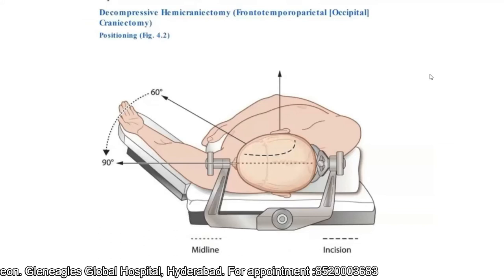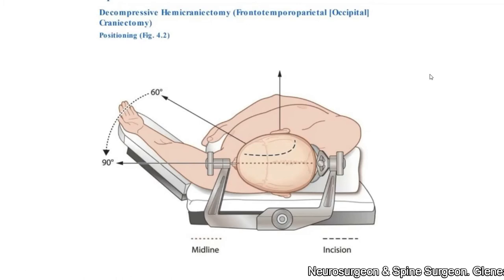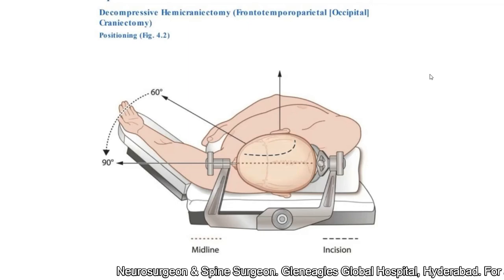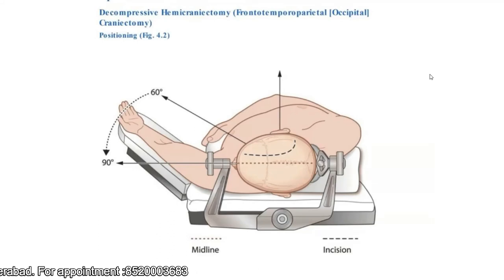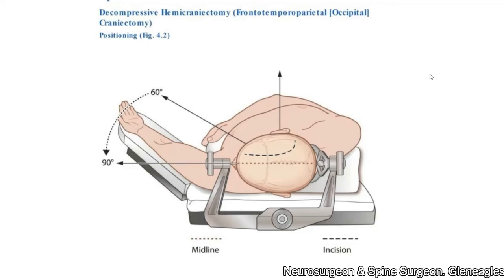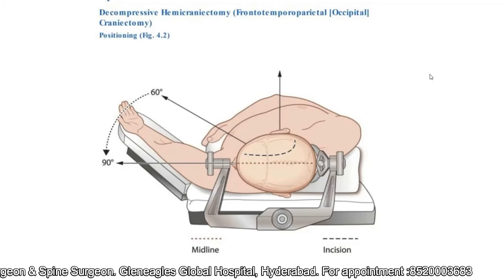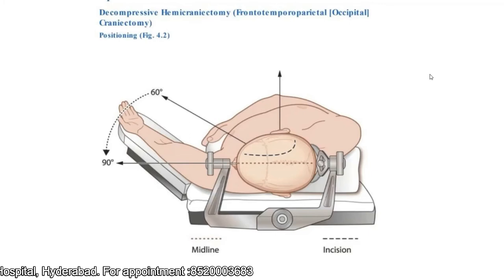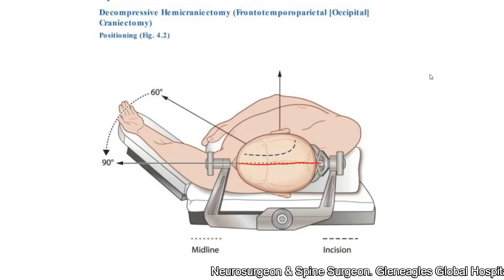Now coming to the procedure proper. As in any other procedure, position is very important. For decompressive craniectomy, you may use either a three-pin headrest for rigid fixation, or because it's an emergency, I personally prefer a standard headrest. Most importantly, you rotate the head to the opposite side, preferably so that the midline of the head is parallel to the table.